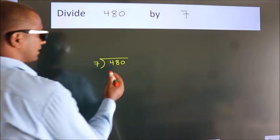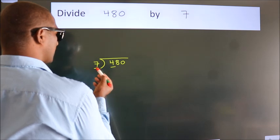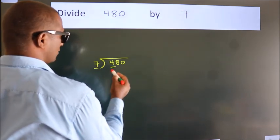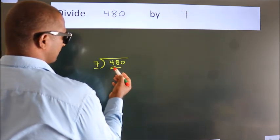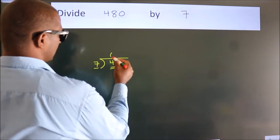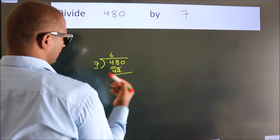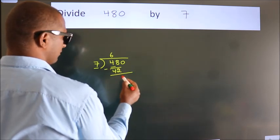Next, here we have 4, here 7. 4 smaller than 7, so we should take two numbers, 48. A number close to 48 in 7 table is 7, 6, 42. Now we should subtract. We get 6.